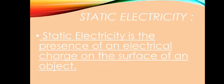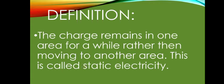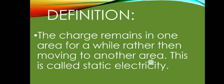Static electricity basically is the presence of an electrical charge on the surface of an object. What is the definition of static electricity? The charge remains in one area for a while rather than moving to another area. This is called static electricity.